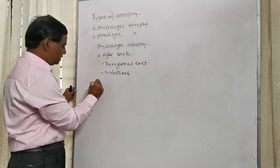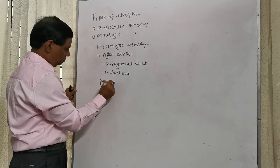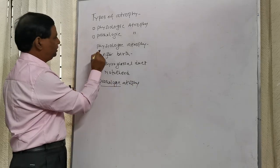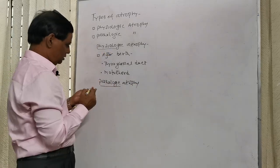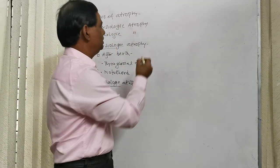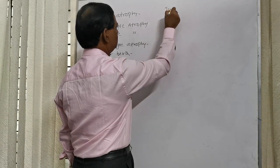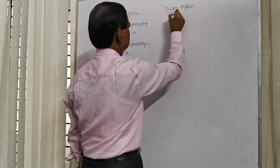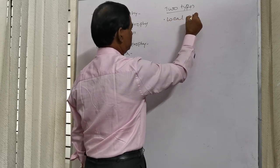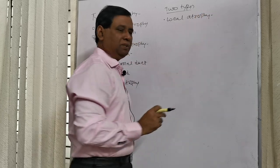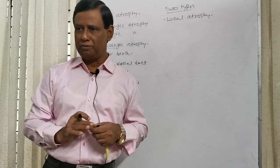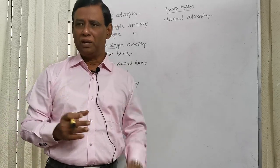Now, come to pathologic atrophy. Pathologic atrophy is of two types: one is local atrophy, another is generalized atrophy. In local atrophy, a local part — not the whole body — undergoes atrophy; only a local part of the body undergoes atrophy.